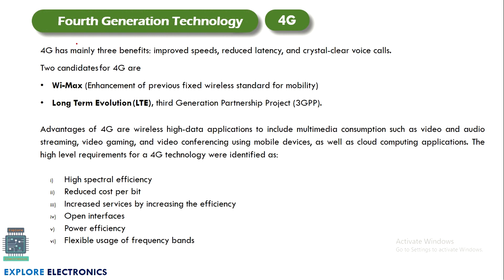Fourth generation technology gives improved internet access speed, reduced latency, and crystal clear voice calls. There are two categories: WiMAX (an enhancement of the previous fixed wireless standard for mobility) and LTE (the 3GPP — Third Generation Partnership Project standard). Advantages of 4G include wireless high-data applications such as multimedia consumption — video and audio streaming, video gaming, video conferencing — using mobile devices and cloud computing. 4G also offers high spectral efficiency, reduced cost per bit, increased service efficiency, open interfaces, power efficiency, and flexible usage of frequency bands.